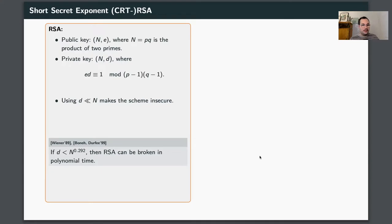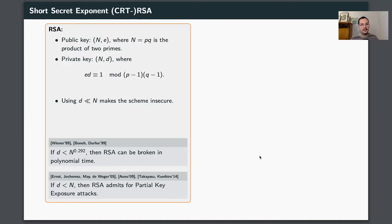It's an interesting question to ask: what happens if I choose D which is just slightly above this bound of N to the power of 0.292? Well, then you can't show that RSA becomes completely insecure, but you can still show something very surprising — and that is this line of research, starting with a result by Ernst, Jochemsz, May, and de Weger from 2005, and then improved by Aono, Takayasu, and Kunihiro. They showed that whenever you use small d, meaning d smaller than N, then RSA admits so-called partial key exposure attacks.